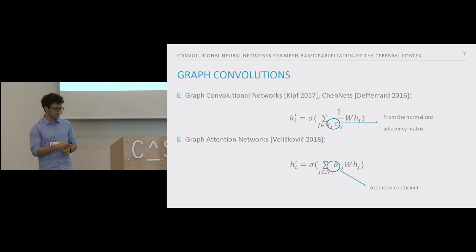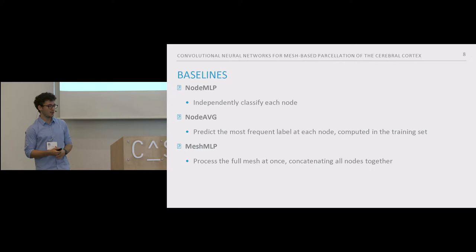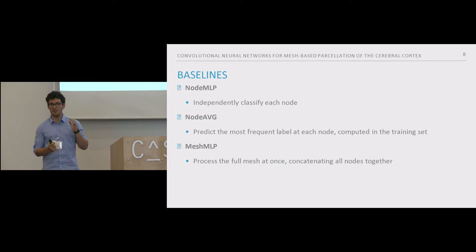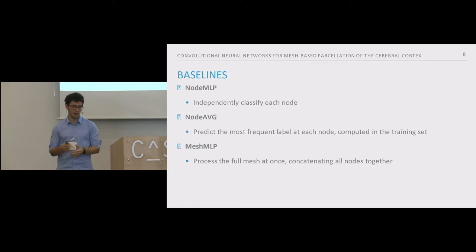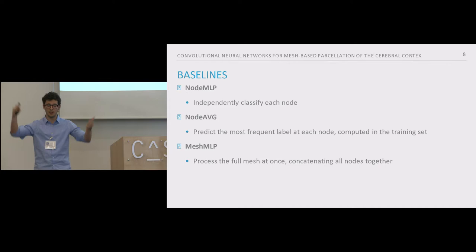To see how much we improve by exploiting the underlying structure, we compare against baselines that do not. The first baseline is the Node MLP — a multi-layer perceptron trained on node features that processes nodes independently without looking at other nodes. The second is Node Average, a basic approach that predicts the most frequent label for a node computed on the training set, not using features at all. Finally, Mesh MLP is an improved version where instead of processing each node independently, we concatenate all nodes and process them through an MLP that produces the segmentation for the full mesh at once.